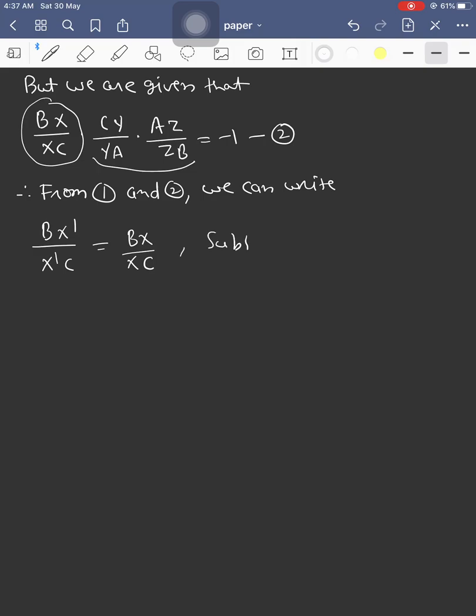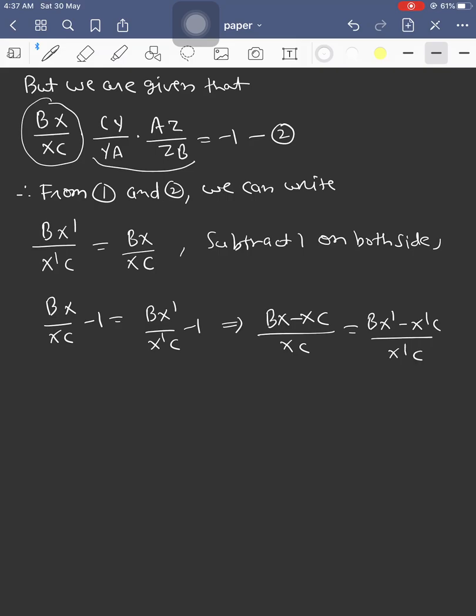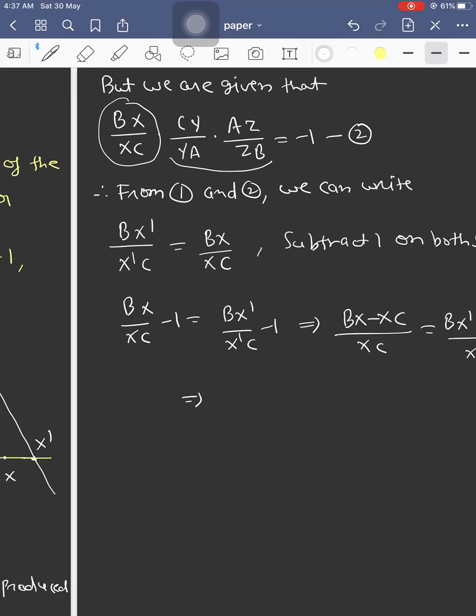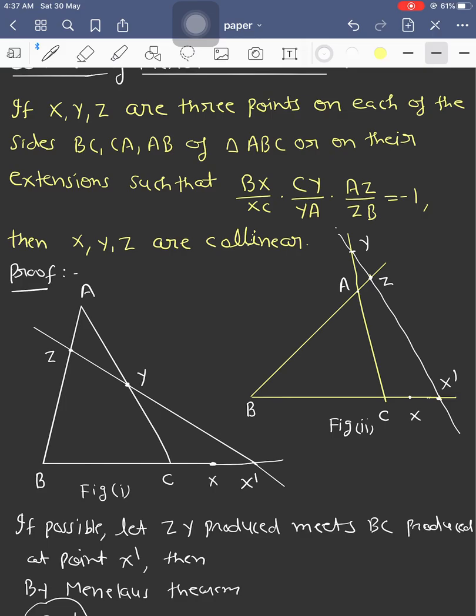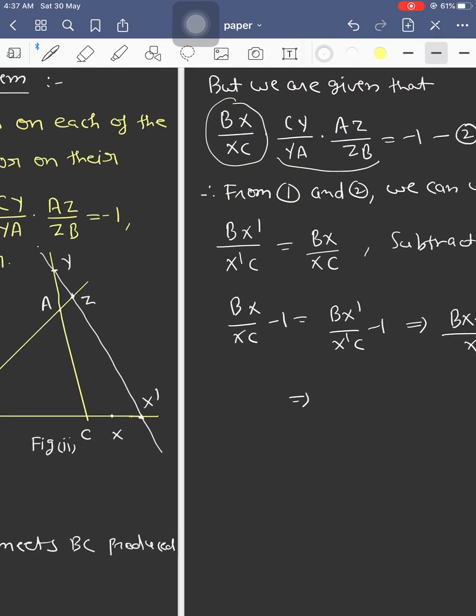Now subtract 1 on both sides: BX/XC - 1 = BX'/X'C - 1. This implies (BX - XC)/XC = (BX' - X'C)/X'C.